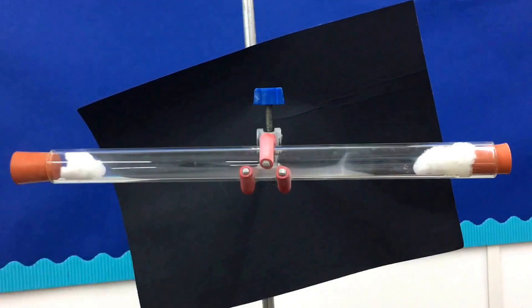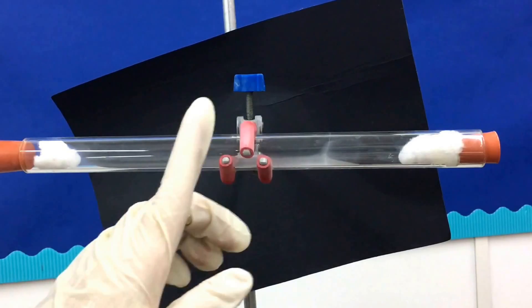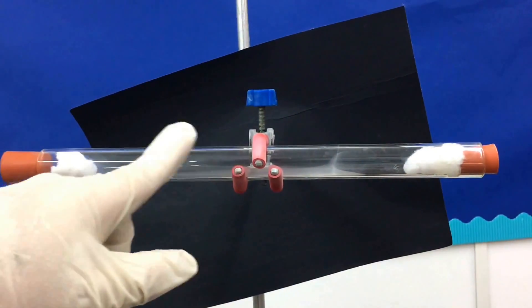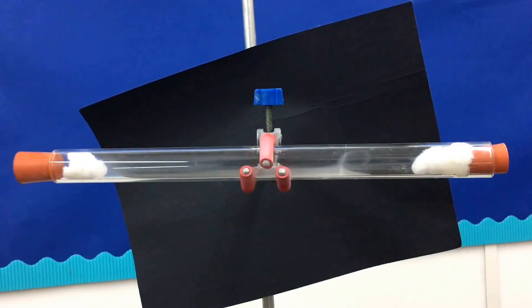Because ammonia is lighter than hydrogen chloride, the ammonia gas diffuses quicker and further along the tube, which is why the ring is further away from the end with the ammonia in but is closer to the end with the HCl on.